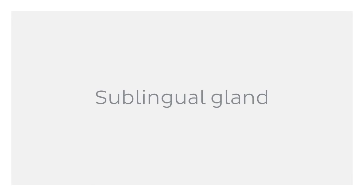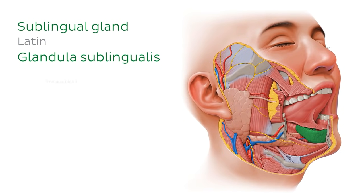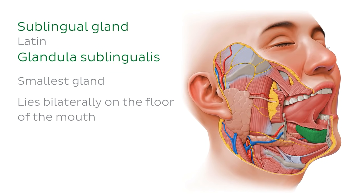First up in our list is the sublingual gland. The sublingual gland is an almond-shaped gland, and is also the smallest of the major salivary glands. It also secretes the smallest amount of saliva per day. The sublingual glands lie bilaterally on the floor of your mouth — one on each side — and have several ductal openings that run along the margin of the sublingual folds, just around here.